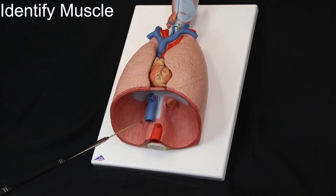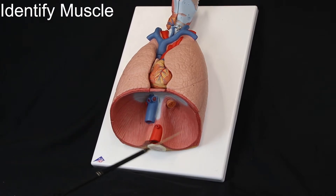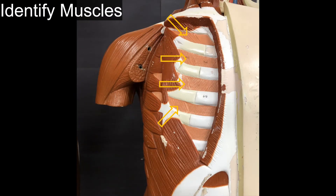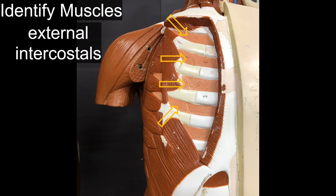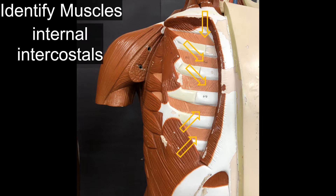ID. Muscle: diaphragm. ID. Muscles: external intercostals. ID. Muscles: internal intercostals.